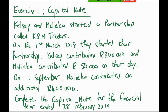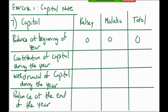Please complete Exercise 1 - the capital note of Kelsey and Malika. The tip here is that the balances of capital at the beginning of the financial year is zero because they're just starting the partnership. Looking at the answer: Kelsey, Malika, and the total all start at zero. Kelsey contributed 300,000 during the year - even though it was on the first day of the financial year, technically the opening balance was zero.